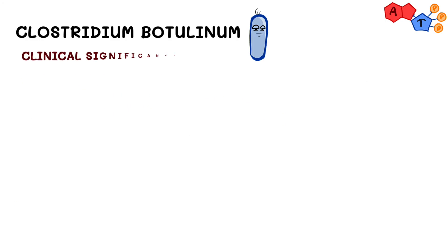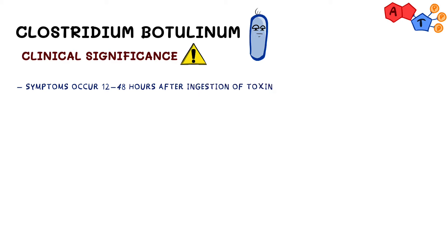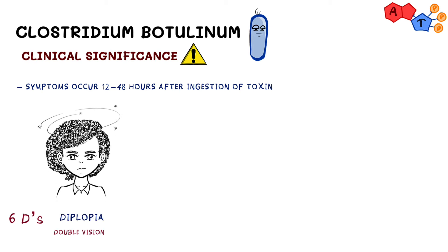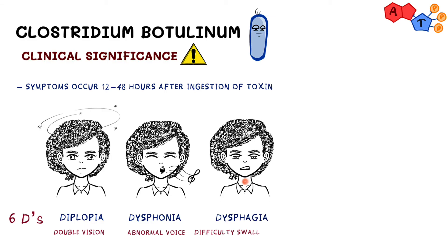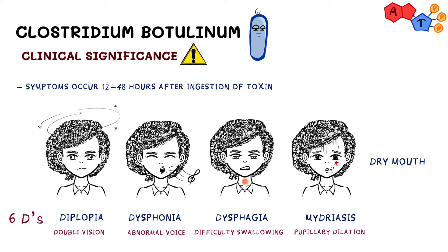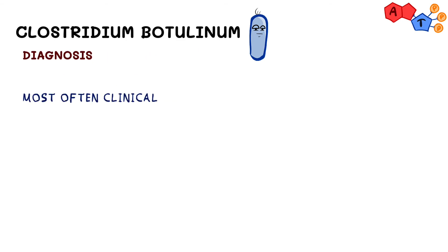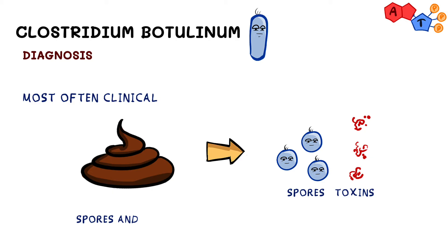For symptoms, it takes about 12 to 48 hours after ingestion of toxins for symptoms to appear. They can be summarized by the six Ds: diplopia (double vision), dysphonia (abnormal voice), dysphagia (difficulty swallowing), dry mouth, mydriasis (pupil dilation), and lastly dyspnea (difficulty breathing). As you can see, symptoms usually have a descending nature. Diagnosis is often clinical, but sometimes spores and toxins can be detected in the stool.